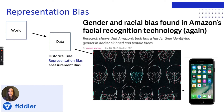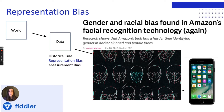Representation bias happens from the way we define and sample from a population. An example is the data first used to train facial recognition systems, which mostly relied on white faces, leading to a model having difficulty recognizing Black or other dark-skinned faces. Another example is datasets collected through smartphone apps, which can under-represent lower-income and older groups who are less likely to own smartphones.